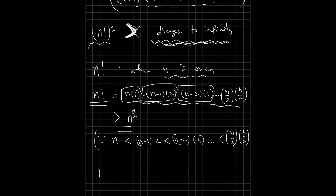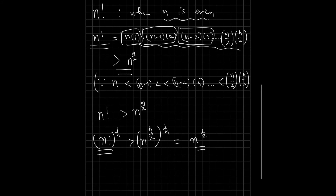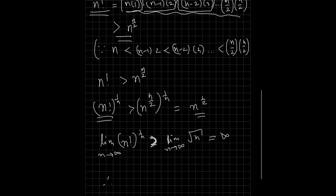This is a good form, because now we can say n factorial is greater than n raised to n over 2. If we raise both sides to 1 over n and take the limit of both sides as n approaches infinity, the limit is in fact infinity.